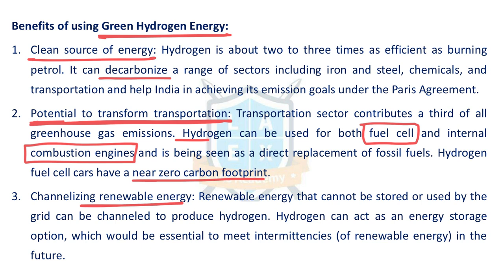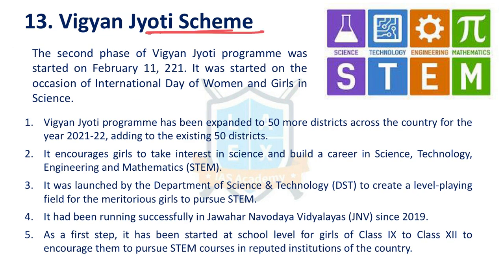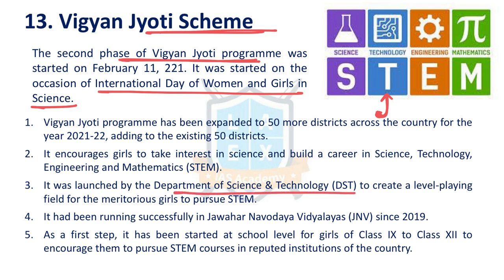The next issue is the Vigyan Jyoti Scheme. The second phase was launched recently on International Day of Women and Girls in Science. This scheme aims to promote awareness among girl children to enter STEM (Science, Technology, Engineering, Mathematics) areas, especially at higher levels, since the number of women doing PhDs is less. The Department of Science and Technology launched this scheme. In the second year, 50 more districts — in addition to the earlier 50 districts — across the country are selected to encourage women to take up STEM areas.